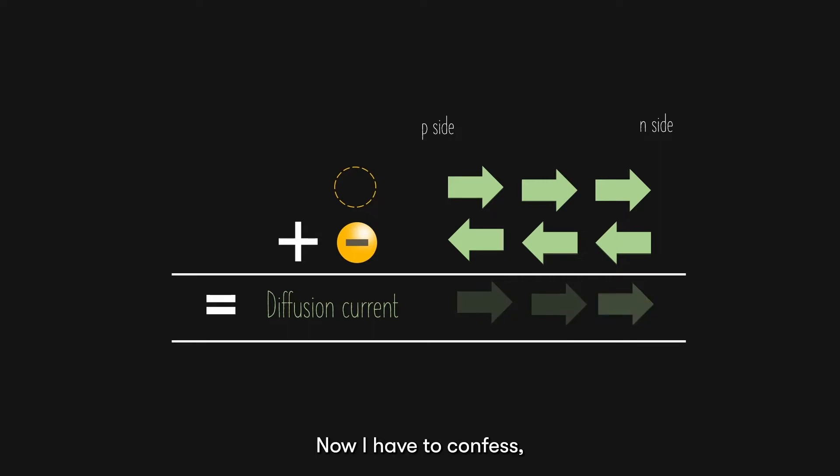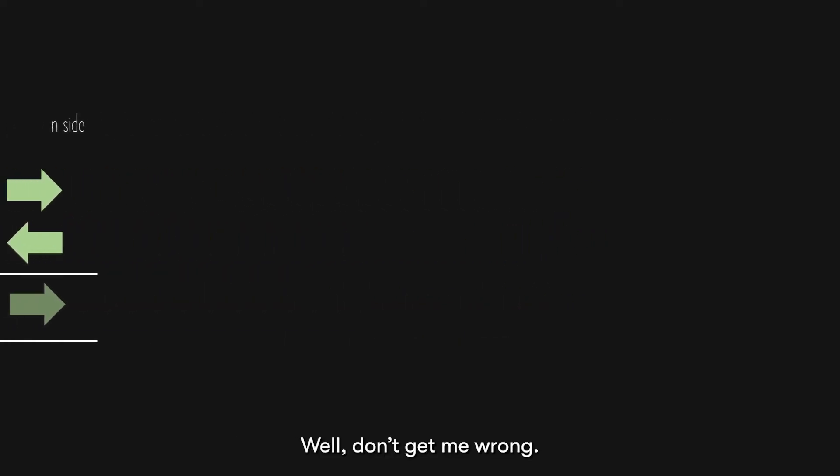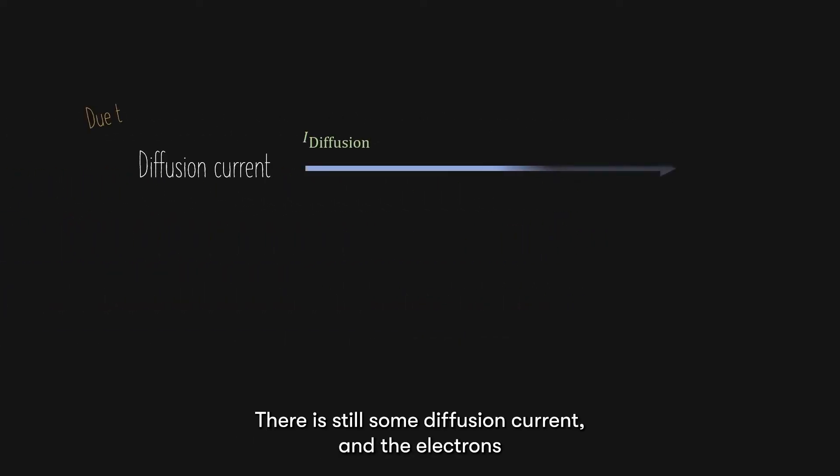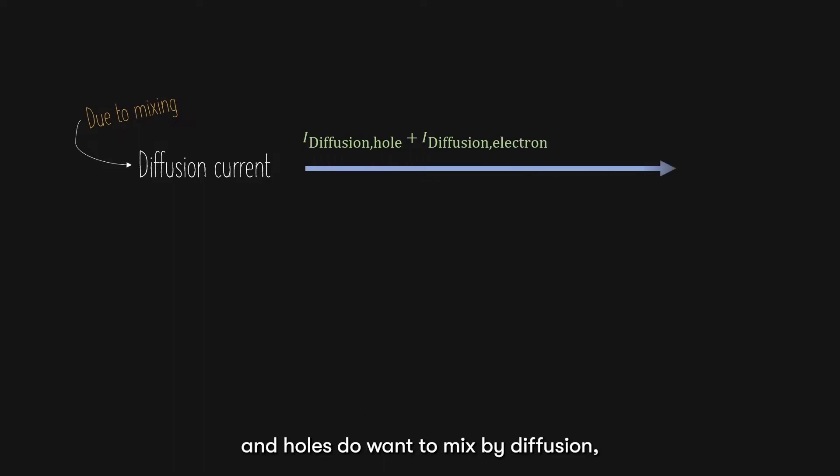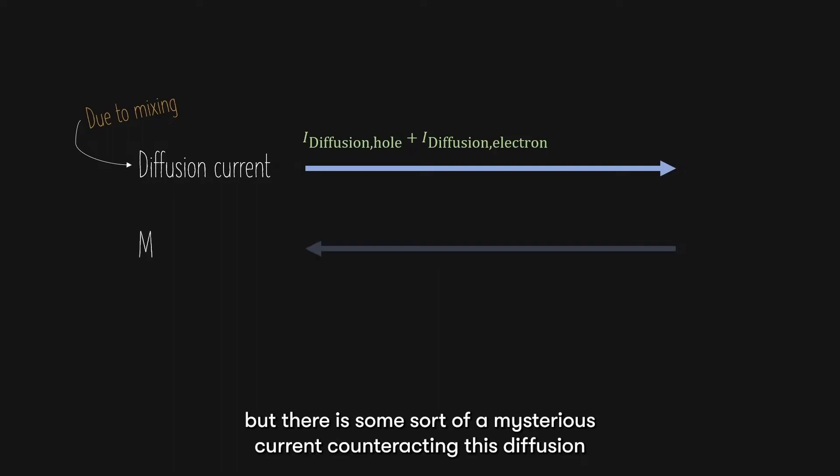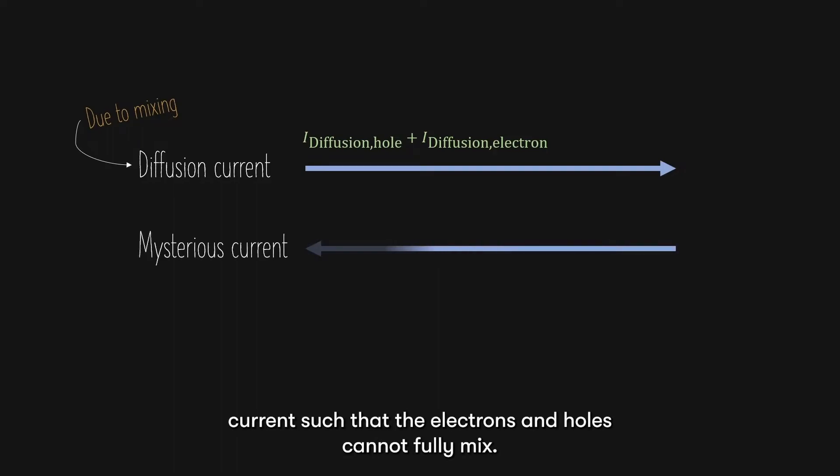Now, I have to confess, this is not the entire picture. In reality, the electrons and holes do not fully mix. Well, don't get me wrong, there is still some diffusion current, and the electrons and holes do want to mix by diffusion. But there is some sort of a mysterious current counteracting this diffusion current, such that the electrons and holes cannot fully mix.